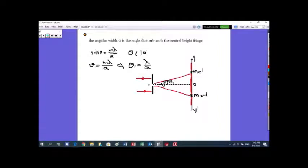Now because theta is a small angle, less than 10 degrees, we are allowed to write sine theta approximately equal to theta. So theta is equal to m lambda over A. But I want angle theta to correspond to the first dark fringe, m equal to 1, so it implies theta 1 equal to lambda over A.